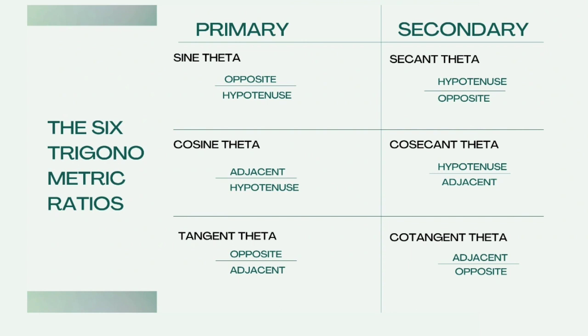In secondary: secant theta is equivalent to hypotenuse over opposite, and cotangent theta is equivalent to adjacent over opposite.